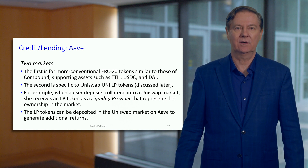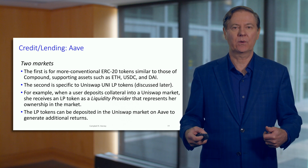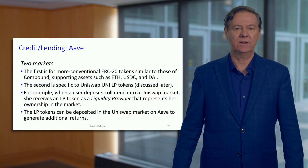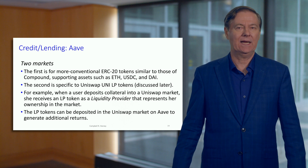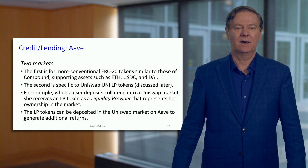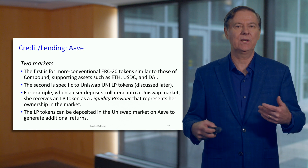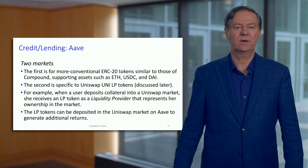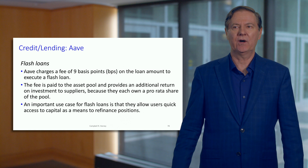Uniswap is up next. The next module is on decentralized exchange and we'll go through a lot of detail on what Uniswap actually does. The LP token — LP for liquidity provider — can be used within the Aave protocol and other DeFi protocols. So it's another way to generate returns.